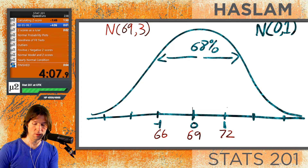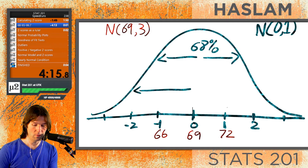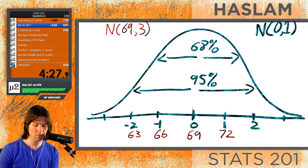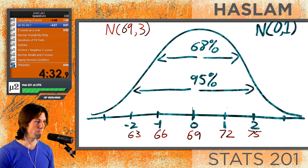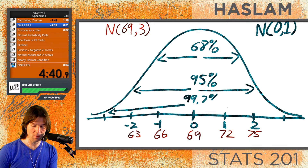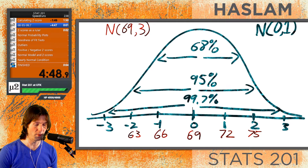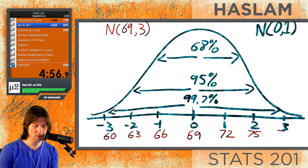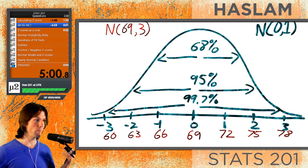Next we get to 95. We go out two standard deviations below and two above. 95% of people's heights according to the normal model is between 63 inches and 75 inches. Then for 99.7%, going plus or minus three standard deviations, 99.7% of heights are expected to be between 60 inches and 78 inches.